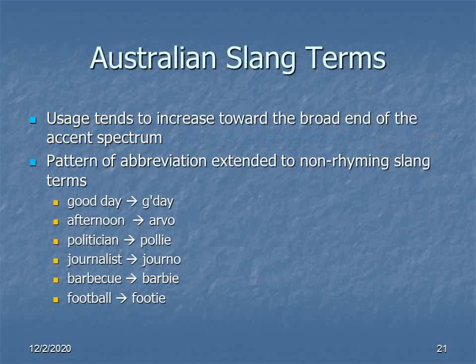Of course there's more to Australian slang than just rhyming slang. One tendency that shows up fairly often — and this seems to have grown out of the rhyming slang habit of abbreviating the initial rhyming term — is abbreviating words themselves. So GOOD DAY becomes G'DAY, AFTERNOON becomes ARVO, a POLITICIAN is a POLLIE, a JOURNALIST is a JOURNO, BARBECUE of course is a BARBIE, and FOOTBALL is FOOTY.